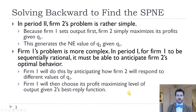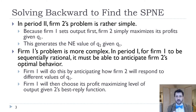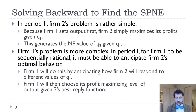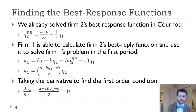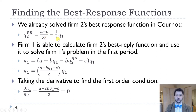In period two, firm two's problem is simple: they produce however much is profit-maximizing given how much firm one said they're going to produce. That generates Nash equilibrium values for both firms. Firm one has to think about how much to announce in order to maximize its profits, knowing that firm two will take that amount into consideration. We already have firm two's best response function from Cournot: Q2 = (A − C)/2B − (1/2)·Q1.